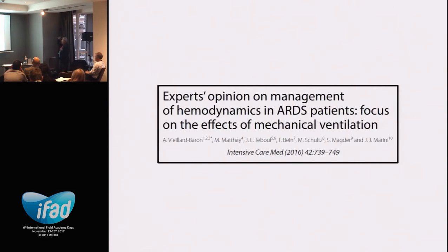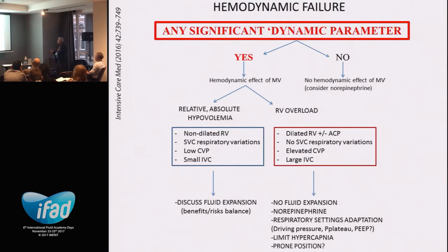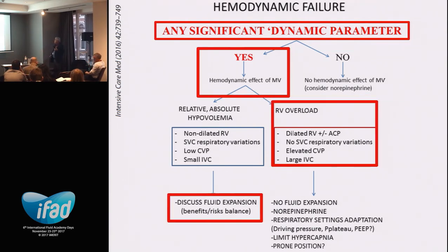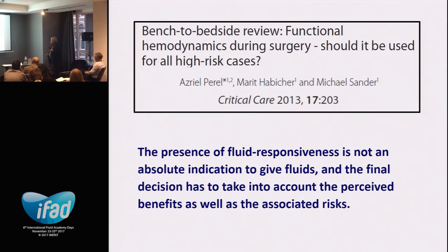Here is a good example of a management algorithm — expert opinion on hemodynamic management in ARDS patients with Jean-Louis Teboul. If there is no fluid responsiveness on any significant dynamic parameter, you don't give fluid and consider norepinephrine. If dynamic parameters show fluid responsiveness, you must exclude right ventricular overload and other known limitations, then decide whether to give fluids or not — because fluid responsiveness is not an absolute indication to give fluid. The final decision must weigh the perceived benefits against the associated risks.